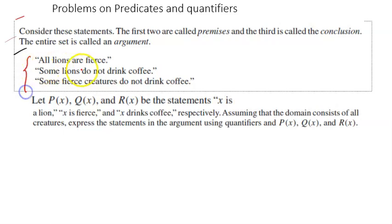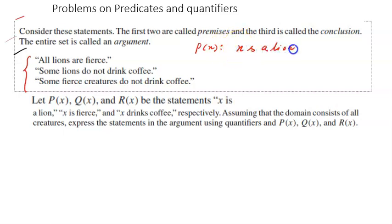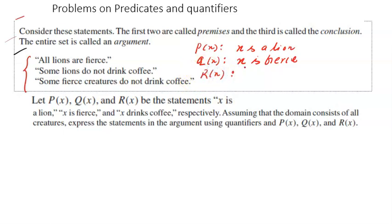We have a list of three statements: all lions are fierce; some lions do not drink coffee; and some fierce creatures do not drink coffee. They have defined three propositional functions: px — x is a lion; qx — x is fierce; and rx — x drinks coffee.